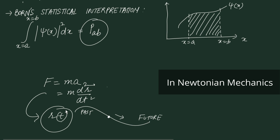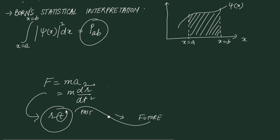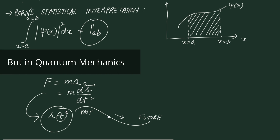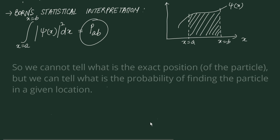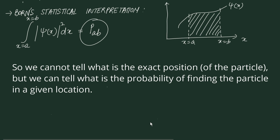In the same way, one of the fundamental equations in quantum mechanics is the Schrödinger's equation, but its solution psi(x) does not directly tell us the particle's position. The particle's position can be extracted via the Born statistical interpretation. Quantum mechanics differs from classical mechanics in that we cannot tell the exact position — we can only tell the probability of finding the particle in a given location.